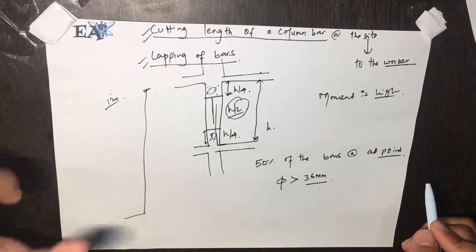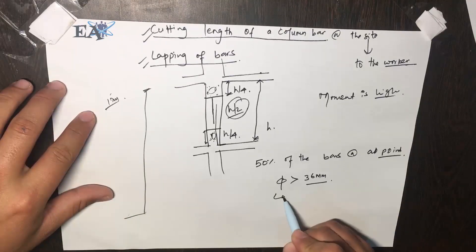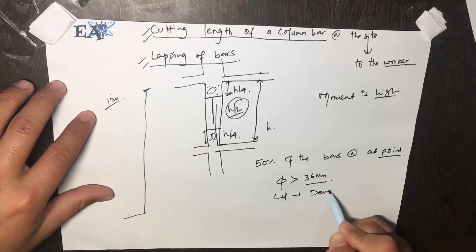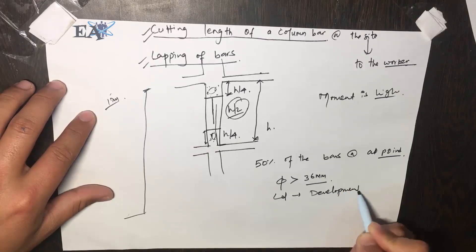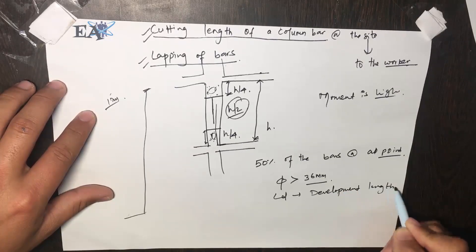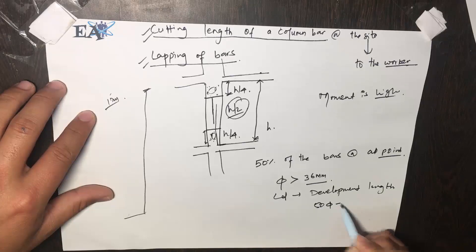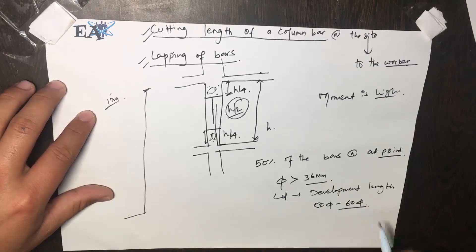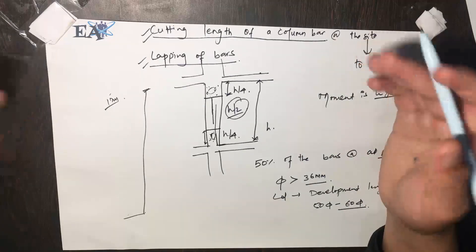The lapping length must be equal to Ld, that is the development length. This is basically around 55 to 65 phi.